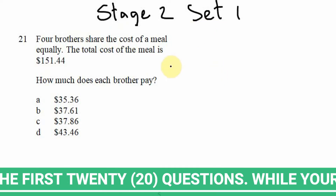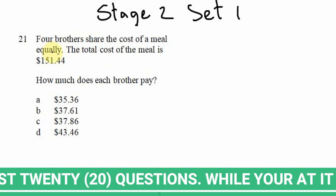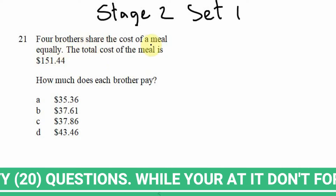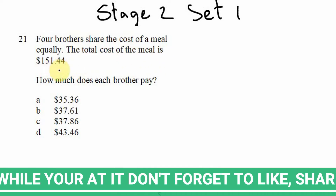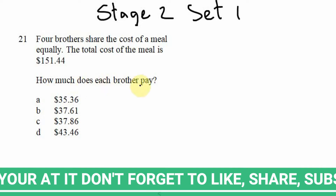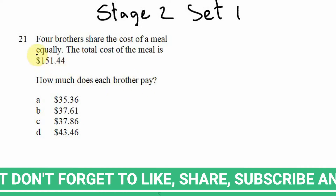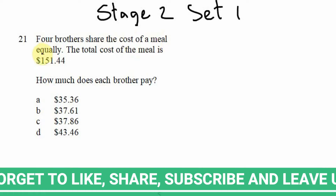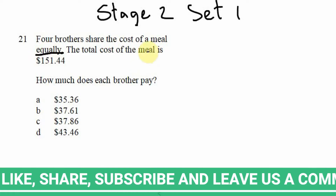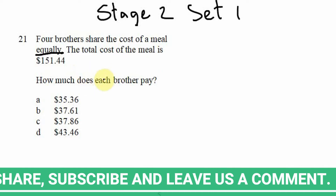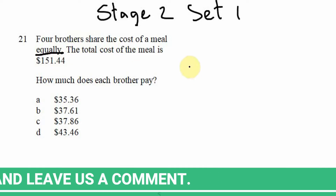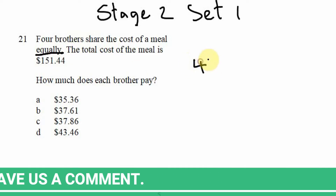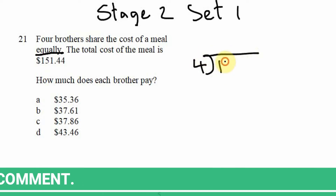Now looking at question 21: four brothers share the cost of a meal equally. The total cost of the meal is $151.44. How much does each brother pay? The key thing here is that the four brothers share the cost equally, so in order to determine the amount each brother pays we need to divide the cost of the meal into four equal parts — how many times can four go into $151.44.